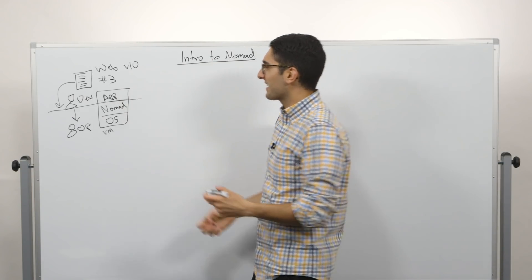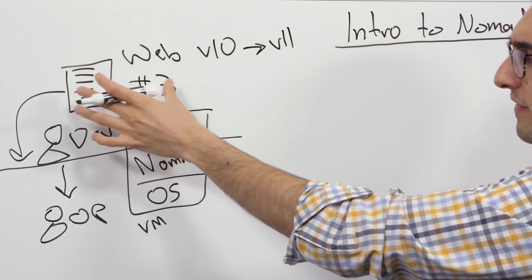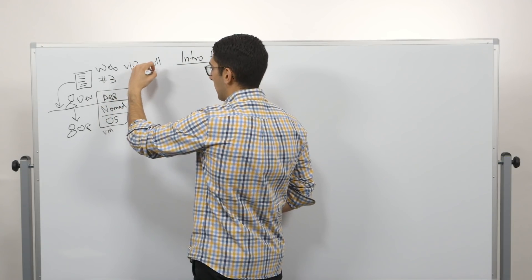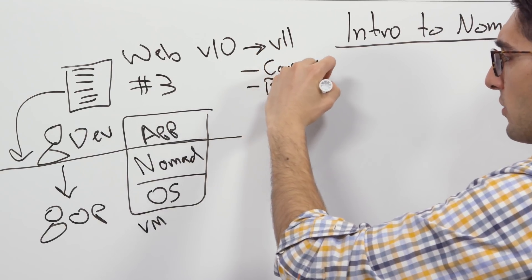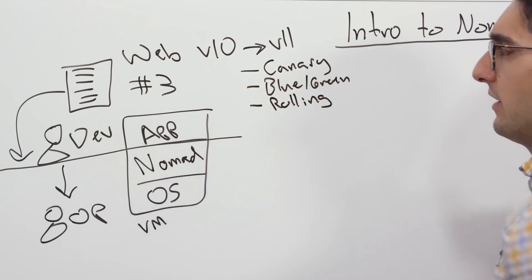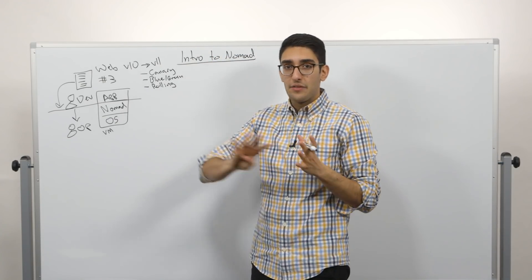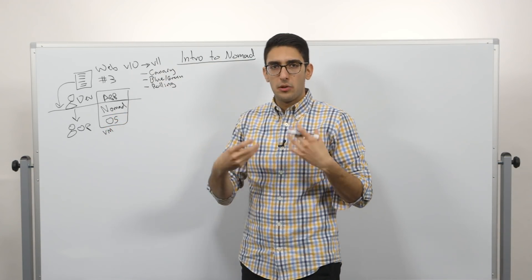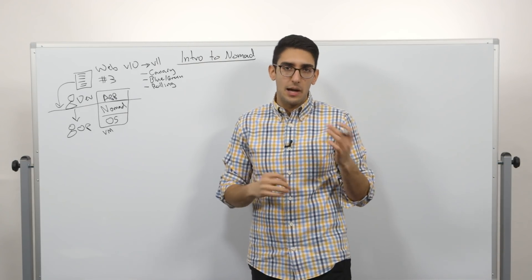And now as a developer, when we come back and say, I want to deploy version 11 of my application, I simply change my job file and then specify what rollout strategy do I want. Do I want to use a canary? Do I want to do a blue-green deployment? Do I want to do a rolling deploy? So I can specify my strategy for deploying my application and then I submit it to Nomad. And Nomad takes care of rolling out this change across the fleet safely. In addition to just managing deploying our application as well as making changes to it, as we change version or scale up and down.